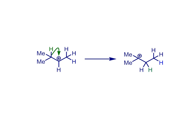A rearrangement is an intramolecular reaction — that is, it occurs within the one molecule — and sees the bonding reorganised from starting material to product. The secondary carbocation on the left has rearranged to form a tertiary carbocation on the right, which is more stable because it is more substituted at the positively charged centre. A hydrogen atom is migrated along with the pair of electrons in that bond, so we call this a hydride migration. And because the hydride has moved from one carbon to the carbon immediately next door, this is classified as a 1,2-hydride migration.